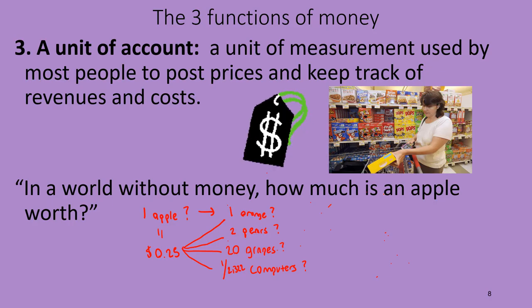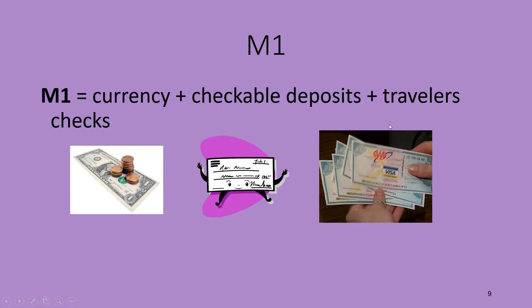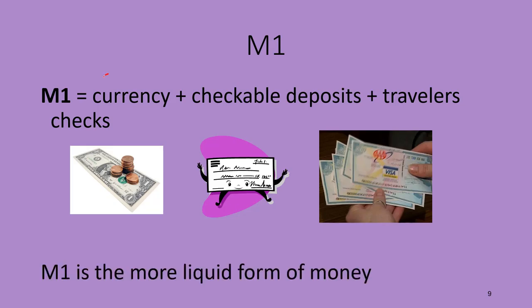Those are the three functions of money — make sure you understand those moving forward. It's important to have a currency by which we can buy goods and services, save for the future, and post prices, rather than having barter exchange where we exchange goods for other goods. The first definition of money supply we're going to talk about is M1, which is currency plus checkable deposits plus traveler's checks. Currency is just cash and coins floating around out there in the world.